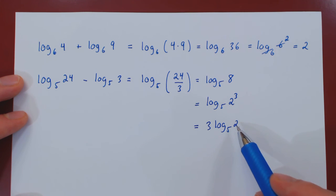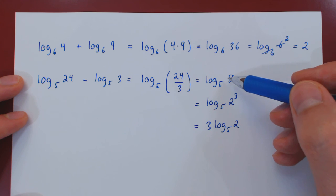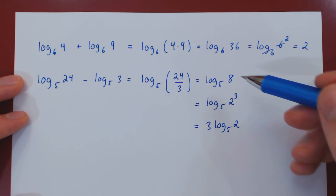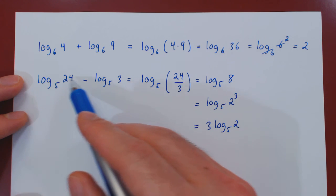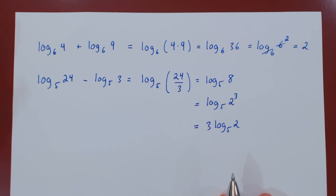Here we have log base 5 of 2, so a smaller integer, a prime. But we gain an integer multiple up front of the log. So in this case, both answers are what I would consider perfectly legitimate simplifications of the original difference of logs. And that's it.